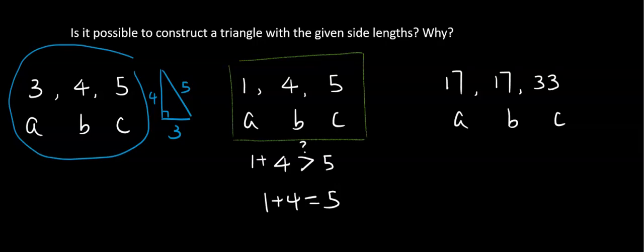Let's look at this one. A, B, C. A and B have equal length. So, if we can construct a triangle, this one is going to be isosceles.